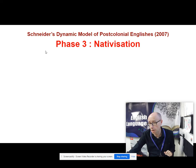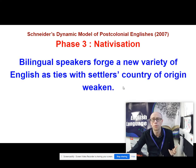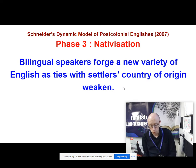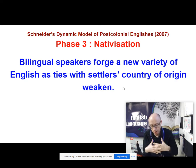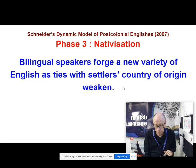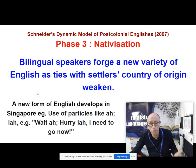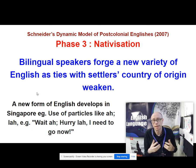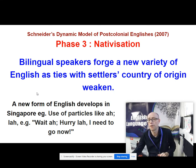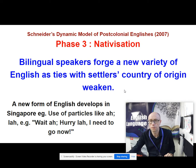It's called exonormative because it looks back towards British English as the standard everyone should be trying to achieve. You then move into nativisation — stage three — where bilingual speakers forge a new variety of English as ties with the settlers' countries of origin weaken. Interethnic contact increases, a new variety of English develops, and conservative speakers might resent this innovation, but others begin to adopt local forms. In Singapore, for example, you get the use of particles like 'a' and 'la' — as in 'wait a' or 'hurry la, I need to go now' — as part of the nativisation process.